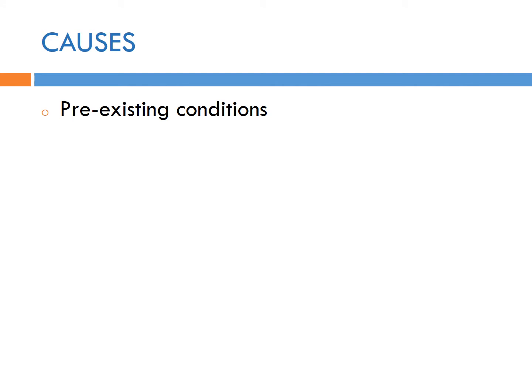Causes of adverse events can include pre-existing conditions — hypertension, diabetes, asthma. These pre-existing conditions can suddenly get worse. And again, it doesn't matter whether it's related to that person's participation in clinical research. It's just a pre-existing condition that got worse. The more pre-existing conditions a person has, the more likely they might have an adverse event.